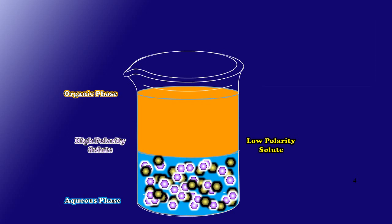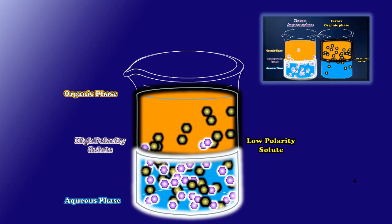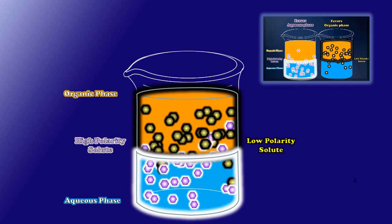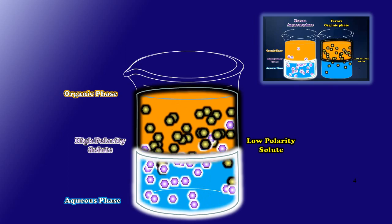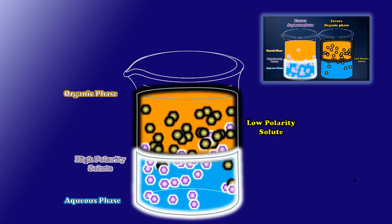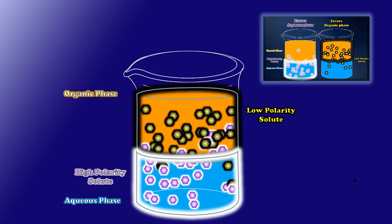And recall from our earlier discussion how these two solutes behave, with the higher polarity solute accumulating in the aqueous layer and the lower in the organic. So over time as my equilibrium establishes itself, very clearly what's going on here is I've got more low polarity solute in the organic phase and more of my high polarity solute in the aqueous phase. So separating those two different compounds from one another is as simple as separating the two layers within my beaker.